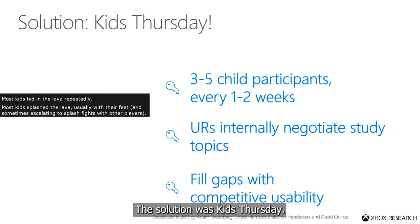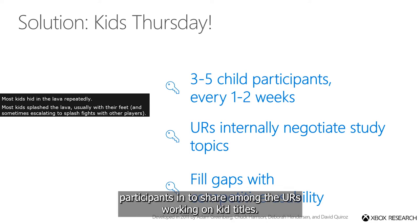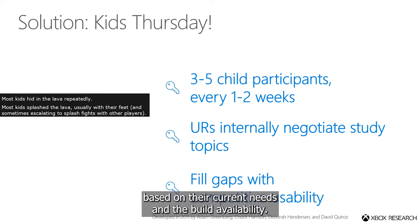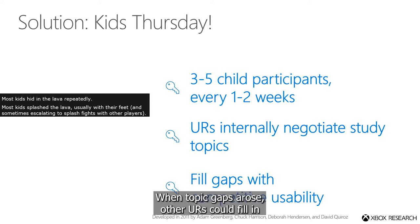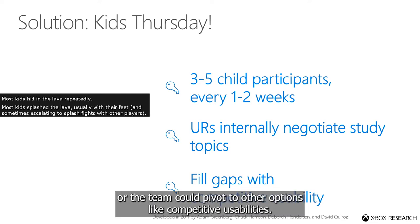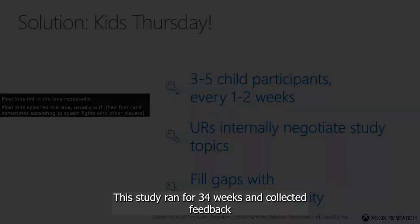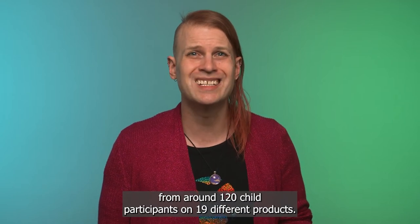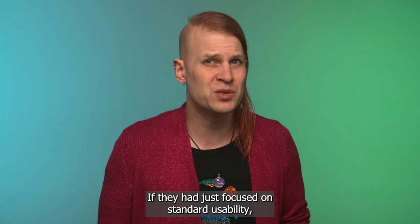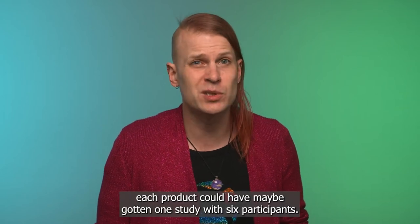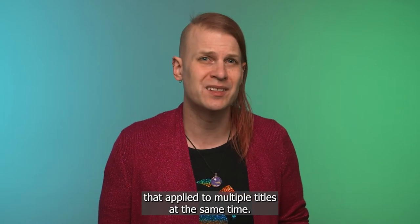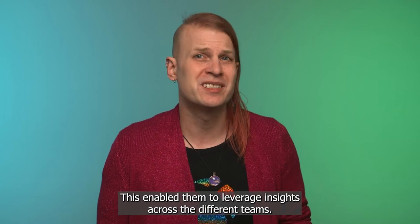The solution was Kids Thursday. Every week or two, the team would bring three to five child participants in to share amongst the URs working on kid titles. One UR would run the sessions and write up the report. The various URs would negotiate topics based on their current needs and build availability. When topic gaps arose, other URs could fill in, or the team could pivot to other options like competitive usability. This study ran for 34 weeks and collected feedback from around 120 child participants on 19 different products. If they had just focused on standard usability, each product could have maybe gotten one study with six participants.